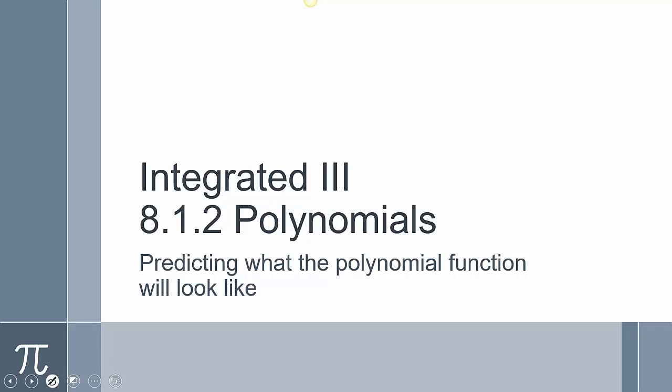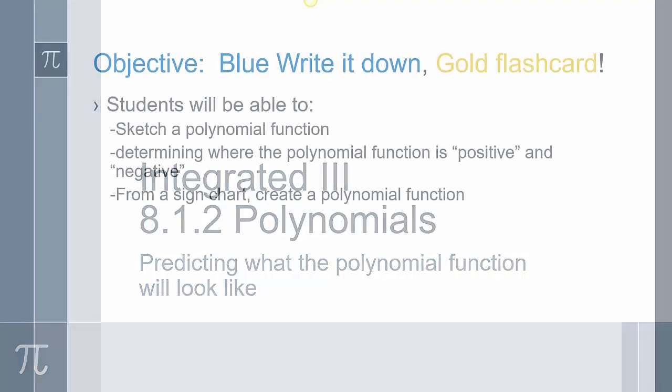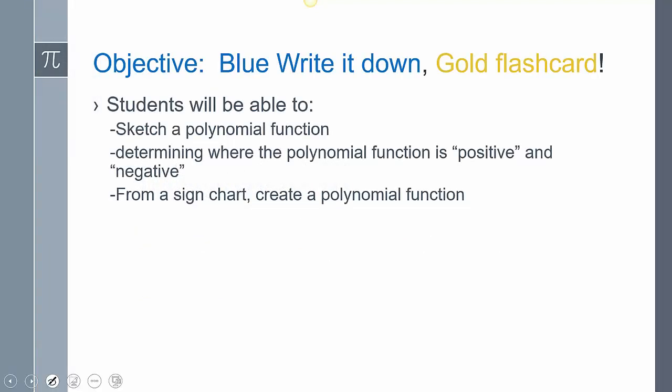This is section 8.12, polynomials. We're going to predict what the polynomial function looks like, practice sketching a polynomial, determine where a polynomial function is positive and negative, and then from a sign chart we're going to create a polynomial function.